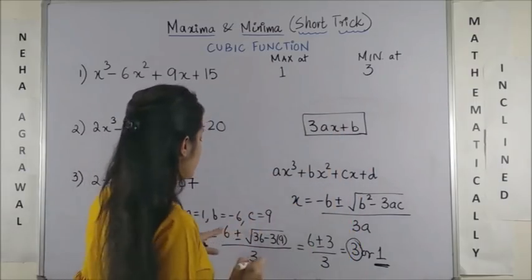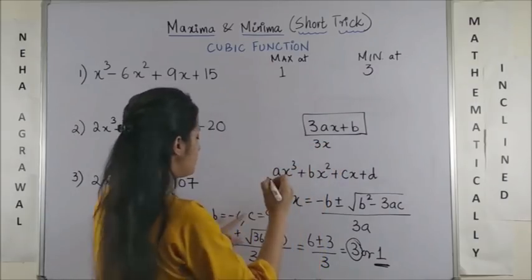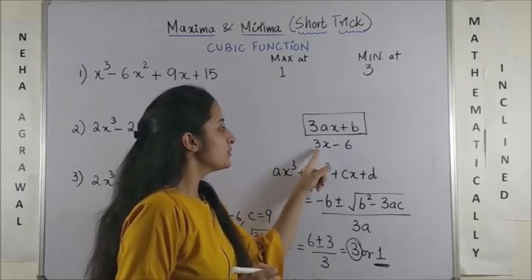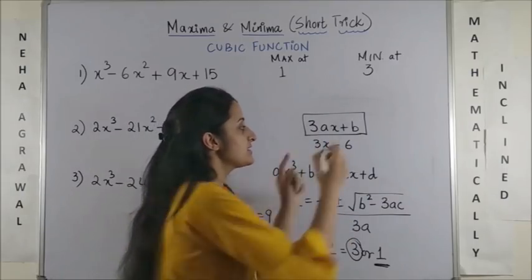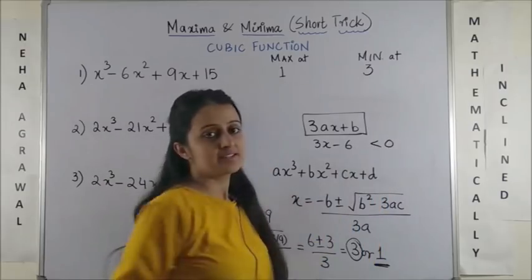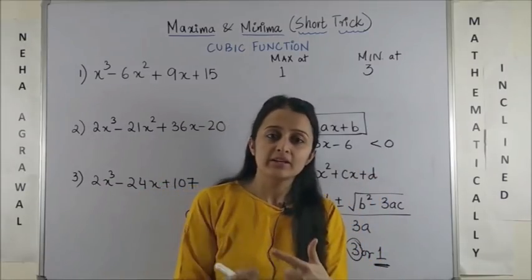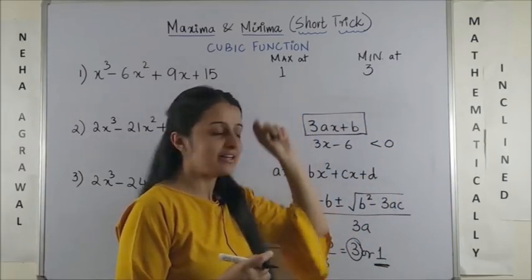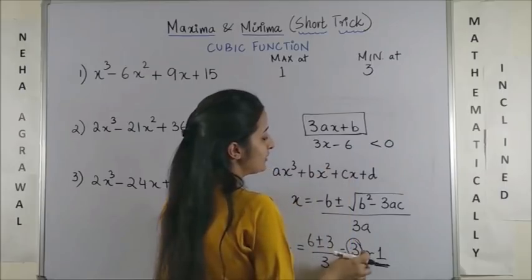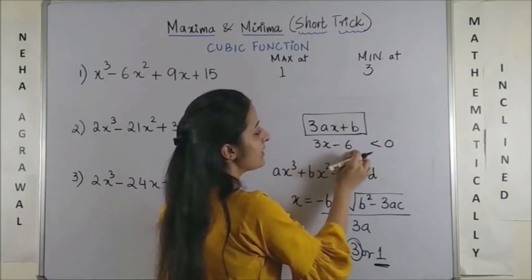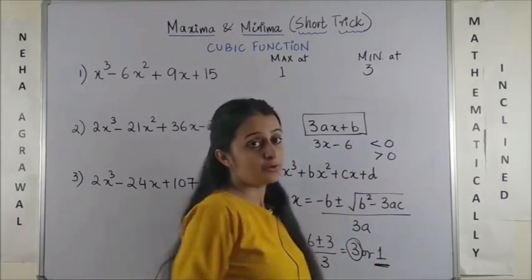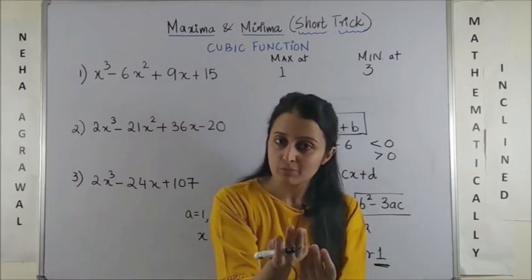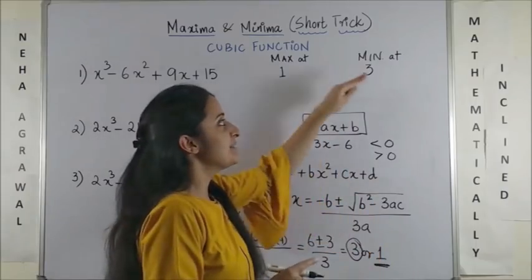So, here my a is 1 and my b is minus 6. If you put x as 1 you get 3 into 1 which is 3 minus 6 which is a negative answer. Now, as you can see it is made out of its double derivative. So, if it's negative it has to attain a maxima there and likewise if I plug in 3 it will be 3 into 3, 9 minus 6 which is greater than 0 and by second derivative you know if your second derivative is positive then you always get the minimum value.